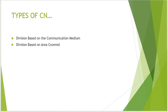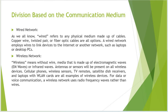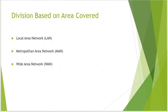The types of computer networks: there are two main divisions — first, division based on communication medium, and second, division based on area covered. Under division based on communication medium you have wired and wireless networks. Under division based on area covered, you will see LAN, MAN, and WAN — local area network, metropolitan area network, and wide area network.